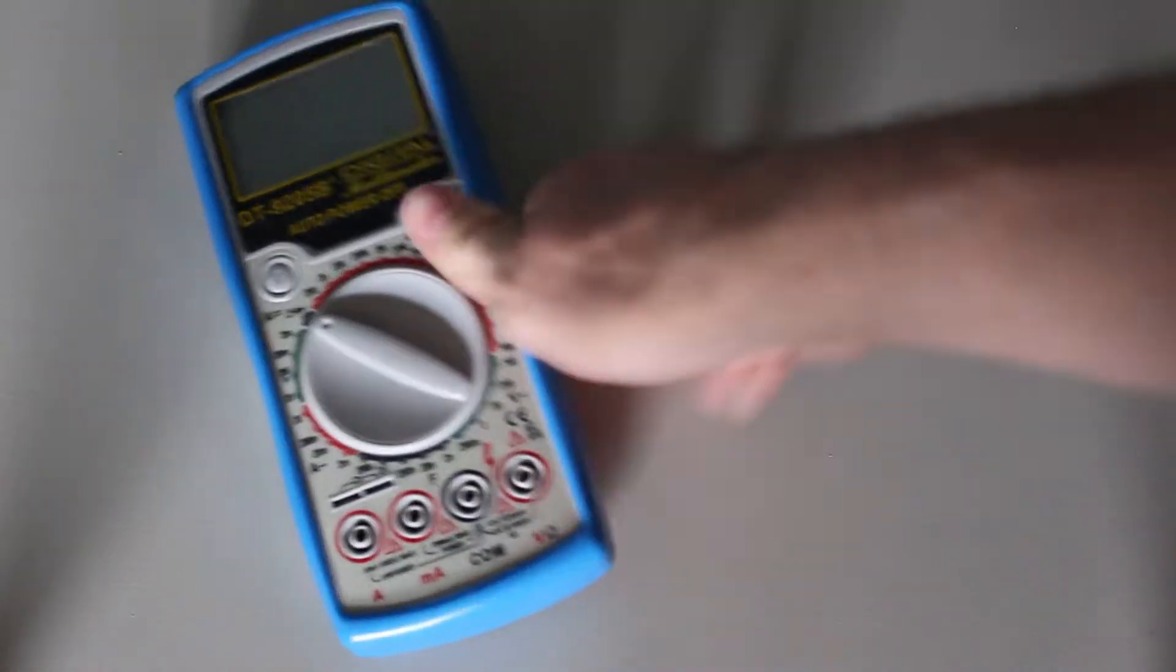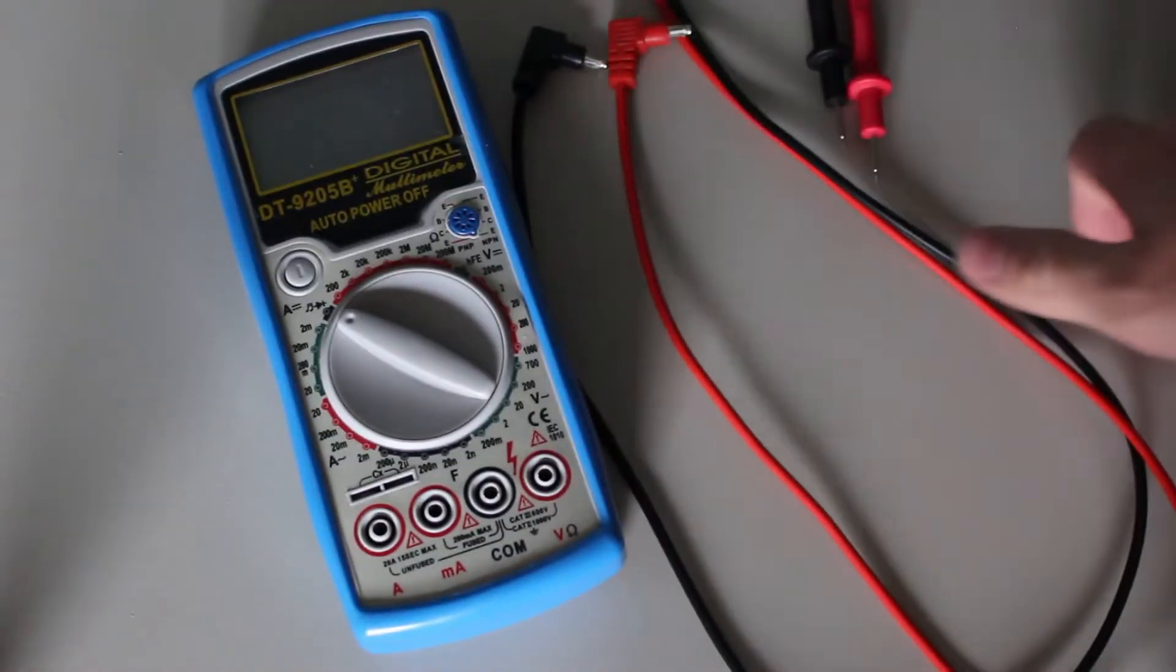This blue one is a DT9205B Plus multimeter, and it costs $17.